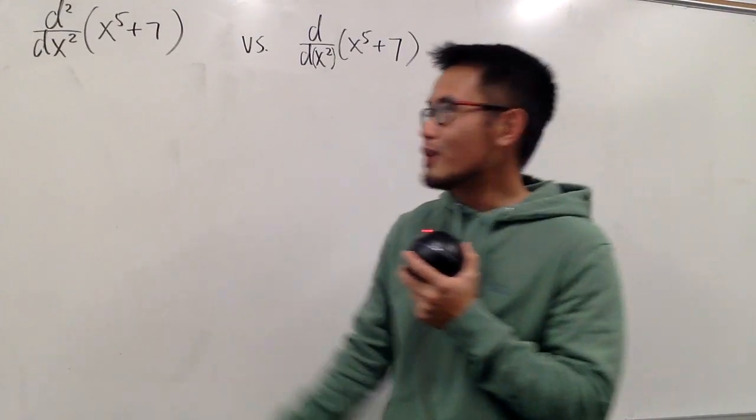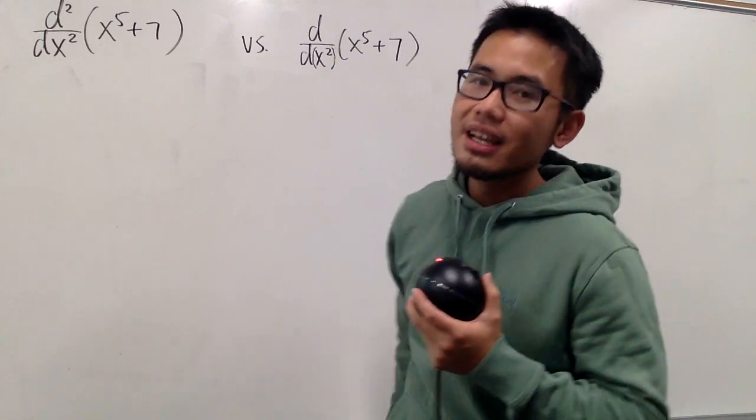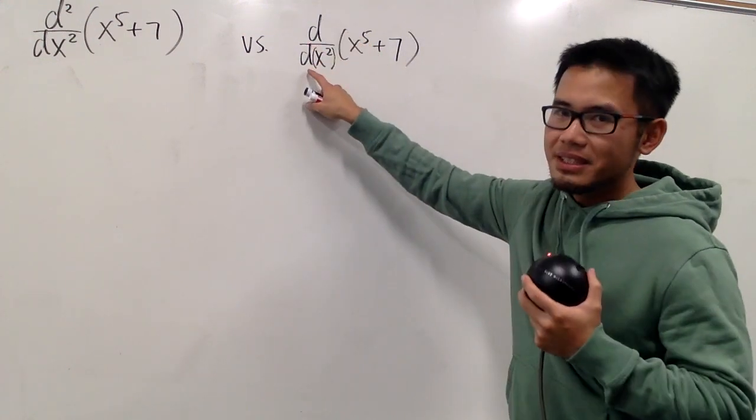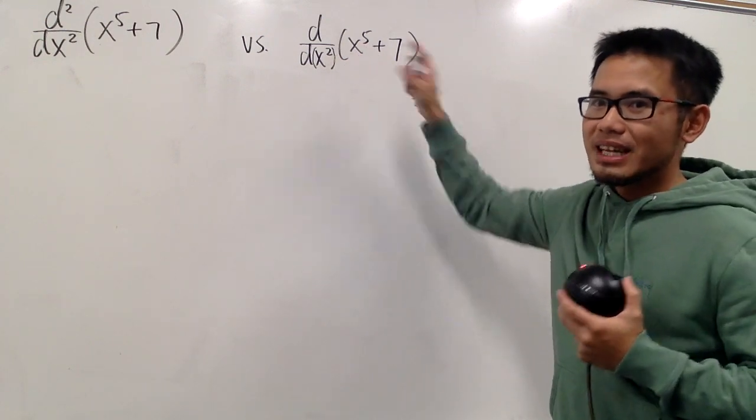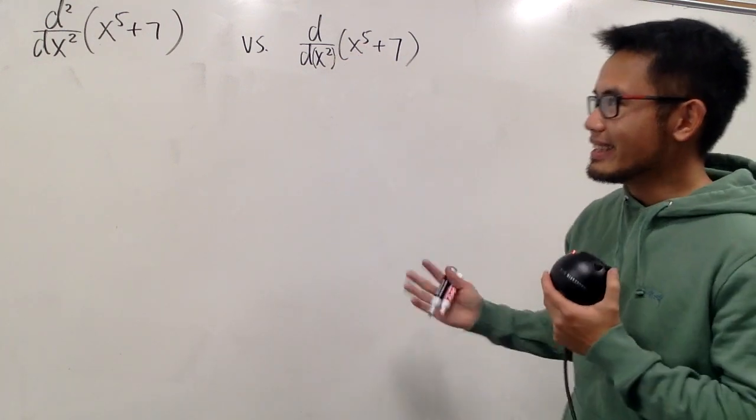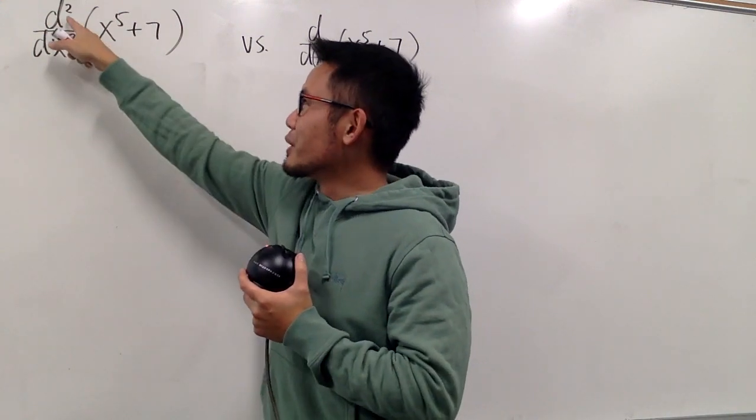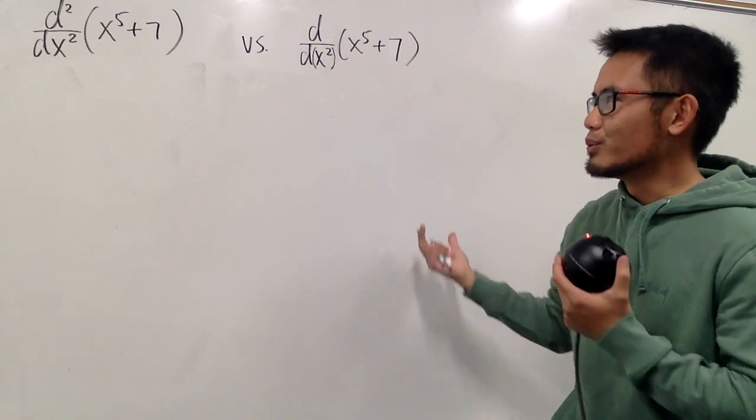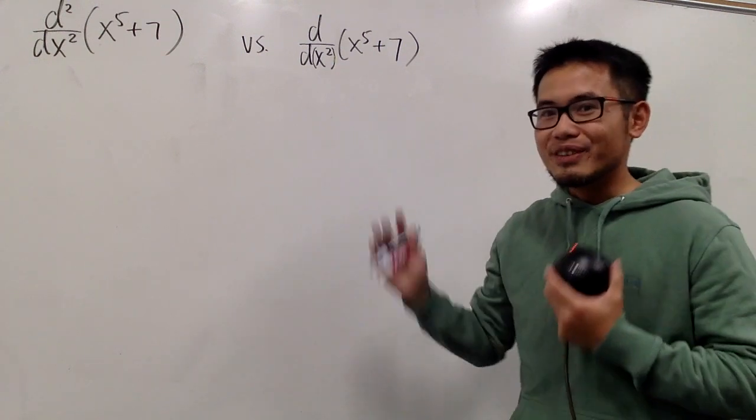Okay, we have two derivative equations on the board. The first one: d² over dx² of x to the fifth power plus 7. And the other one, we just have d over d parentheses x squared, and then x to the fifth power plus 7. They have the same function in the parentheses, but this one has a 2, and this is just d to the first power. So what do they mean? Take some time to think about it, try them first.